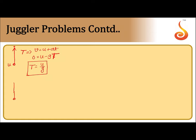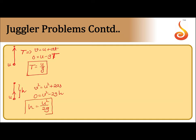The ball is thrown up at speed u and reaches the highest position. To find the maximum height h, we use the third equation of motion: v² = u² + 2as, giving 0 = u² − 2gh. So h = u²/2g. If you are given the initial speed, you can find out the maximum height it reaches.